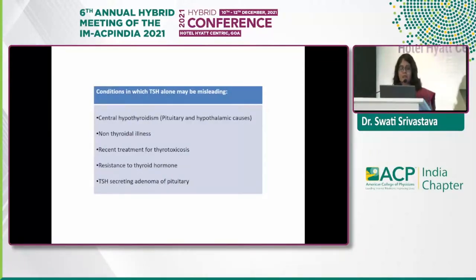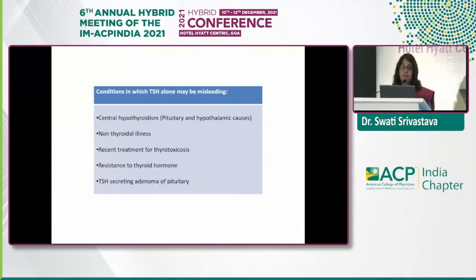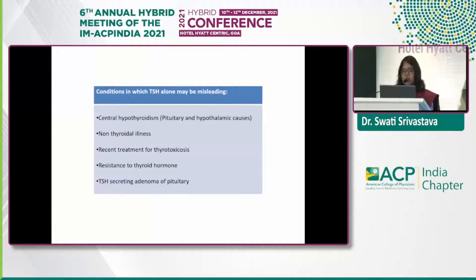Conditions where TSH alone can be misleading include: central hypothyroidism (secondary and tertiary), where TSH does not change; non-thyroidal illness, a very important set of disorders leading to different changes; recent treatment for thyrotoxicosis, where only thyroid hormones give a valid interpretation of ongoing change while TSH remains unchanged for a long time; and, relatively uncommonly, resistance to thyroid hormone and TSH-secreting TSHomas from the pituitary.